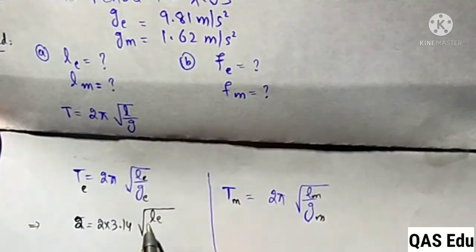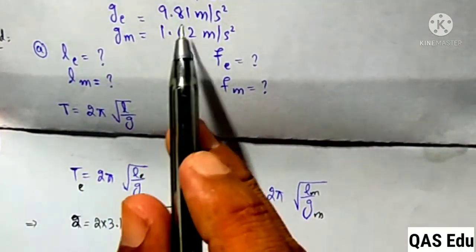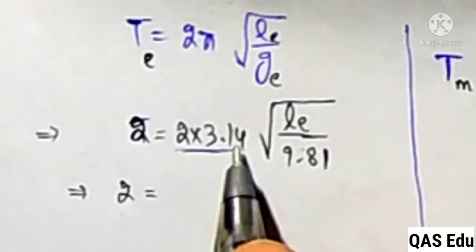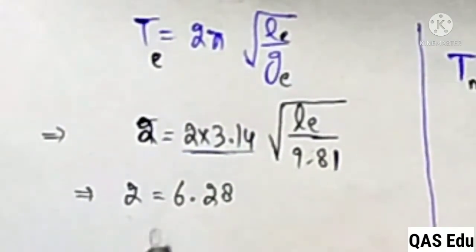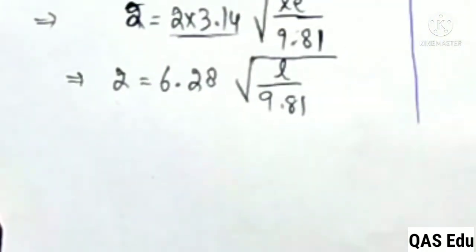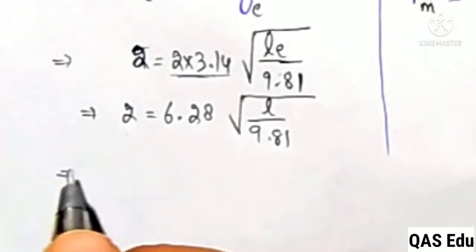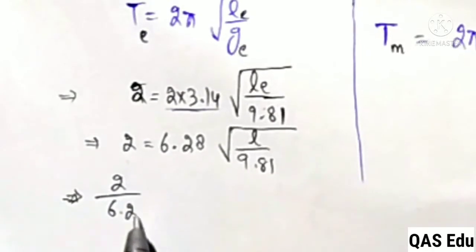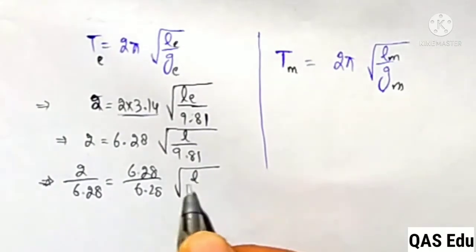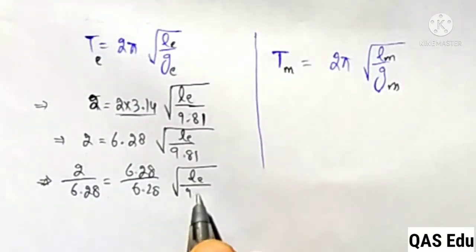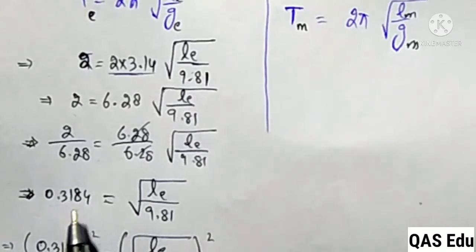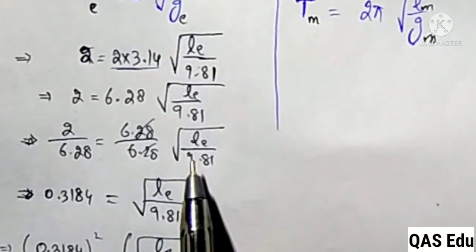The time period T = 2π√(Le/ge). The value of g on Earth is 9.81 m/s². So 2.0 = 2π√(Le/9.81). Dividing by 2π gives 2.0/6.28 = √(Le/9.81). This gives 0.3184 = √(Le/9.81).